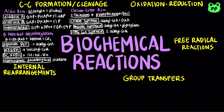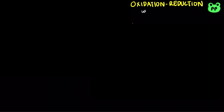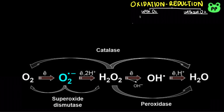Oxidation-reduction reactions involve the transfer of electrons between molecules. Oxidation involves losing electrons, whereas reduction involves gaining electrons. Oxidation-reduction reactions involving oxygen include catalase, which catalyzes the decomposition of hydrogen peroxide to water and oxygen. Since hydrogen peroxide is a reactive oxygen species, catalase is a very important enzyme to protect the cell from oxidative damage.